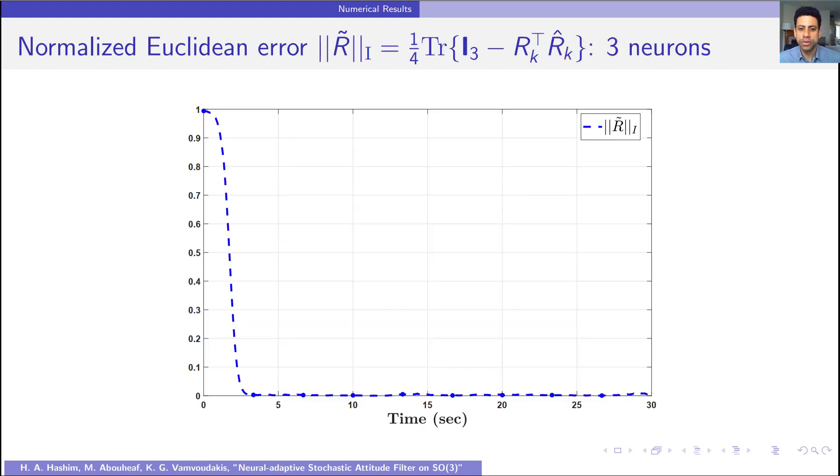Now the effectiveness and robustness of the neural adaptive approach is illustrated in this slide, where the error initiated at large value and rapidly reaches very close to the neighborhood of the origin. Note that in this figure we used only three neurons.